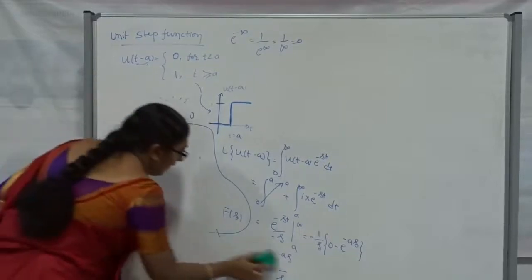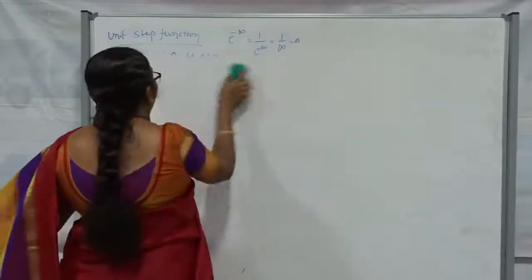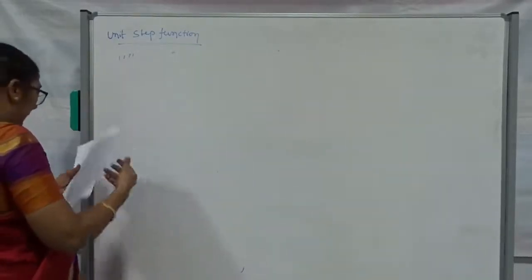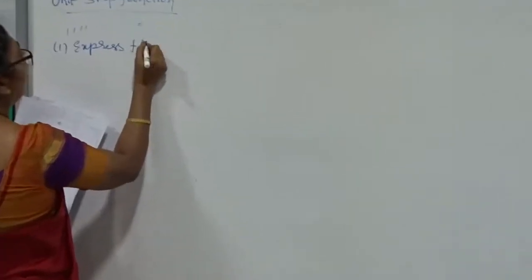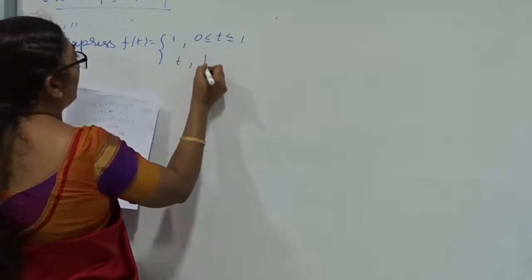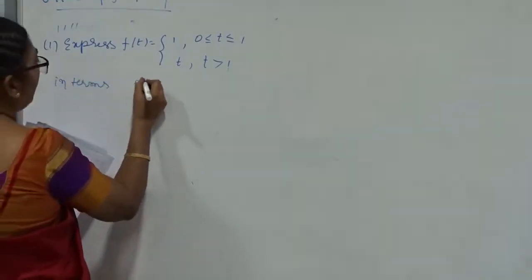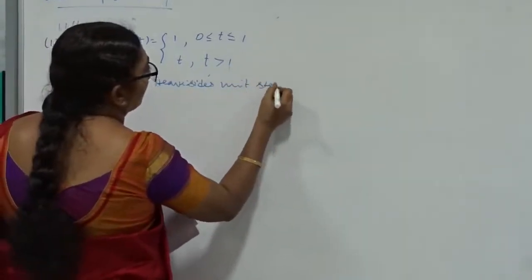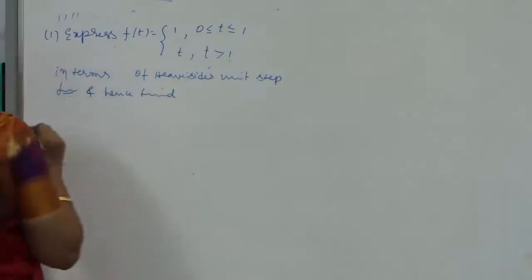Now I am going to take the first problem. The problem is: F of T equals 1 for T greater than or equal to 0 and less than or equal to 1, and T for T greater than 1. Express F of T in terms of the unit step function, and hence find its Laplace transform.